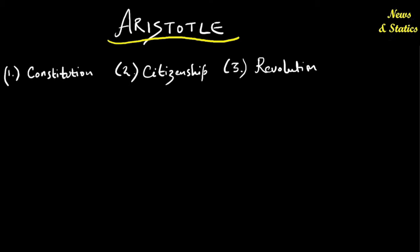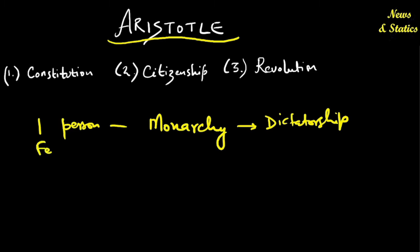Then we come to Aristotle. Aristotle, in his theory of constitutions, he actually studied 158 constitutions. He did a comparative study of that. And he came forward with this. That if only one person rules, you might have a monarchy in the ideal state. But that can get degraded into dictatorship. If few people rule, you will have aristocracy, which in certain cases might get degraded to oligarchy.